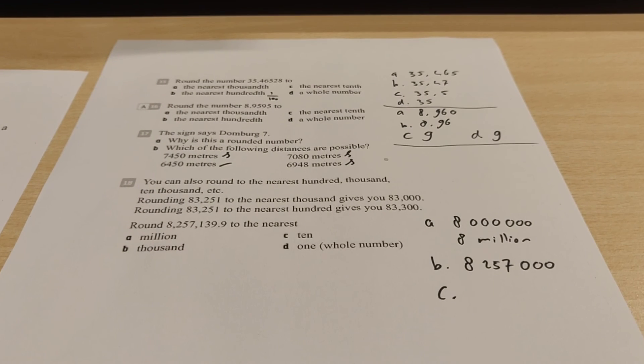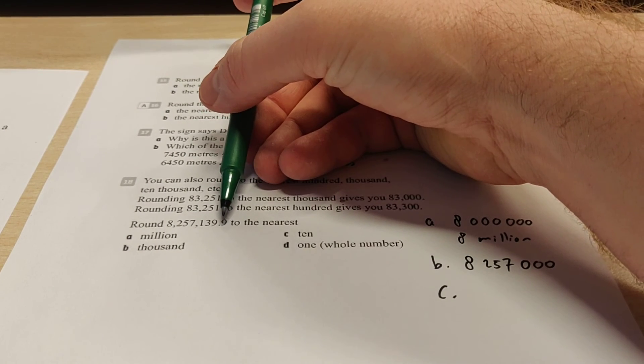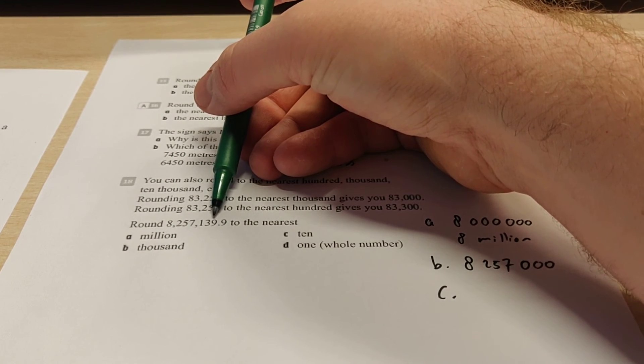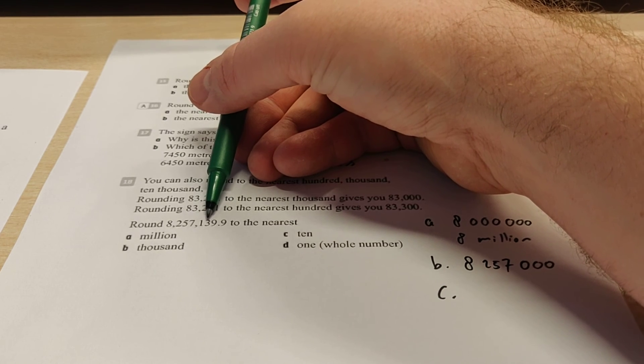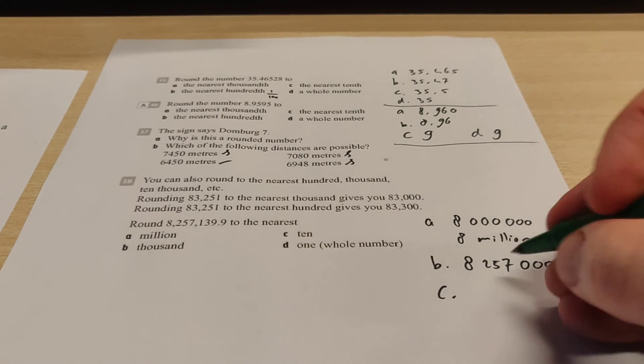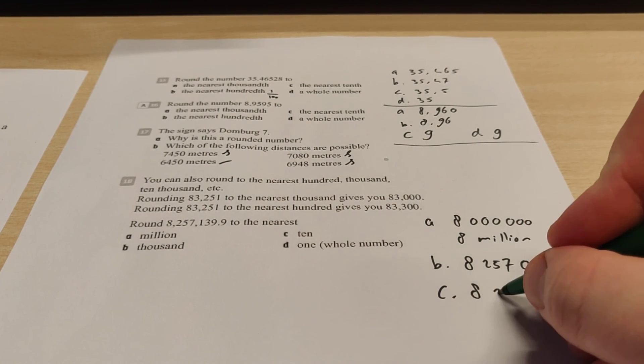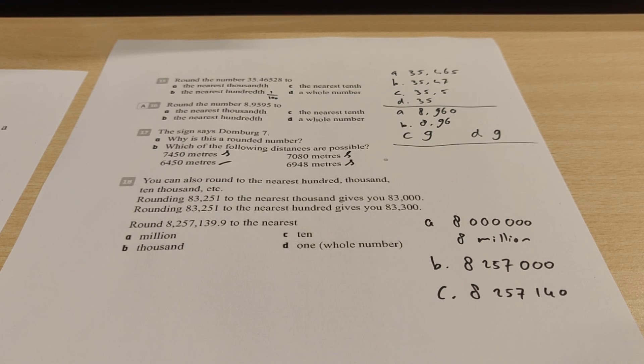Exercise C. Now we have to round it off to the nearest ten. Well, these are the decimal places, right? And then these are the normal units. And then here we have the tens. So it's like 39. So we have to round off to this number. The next one is a nine. So that means that the three becomes a four. So we have 8,257,140. And that's it.